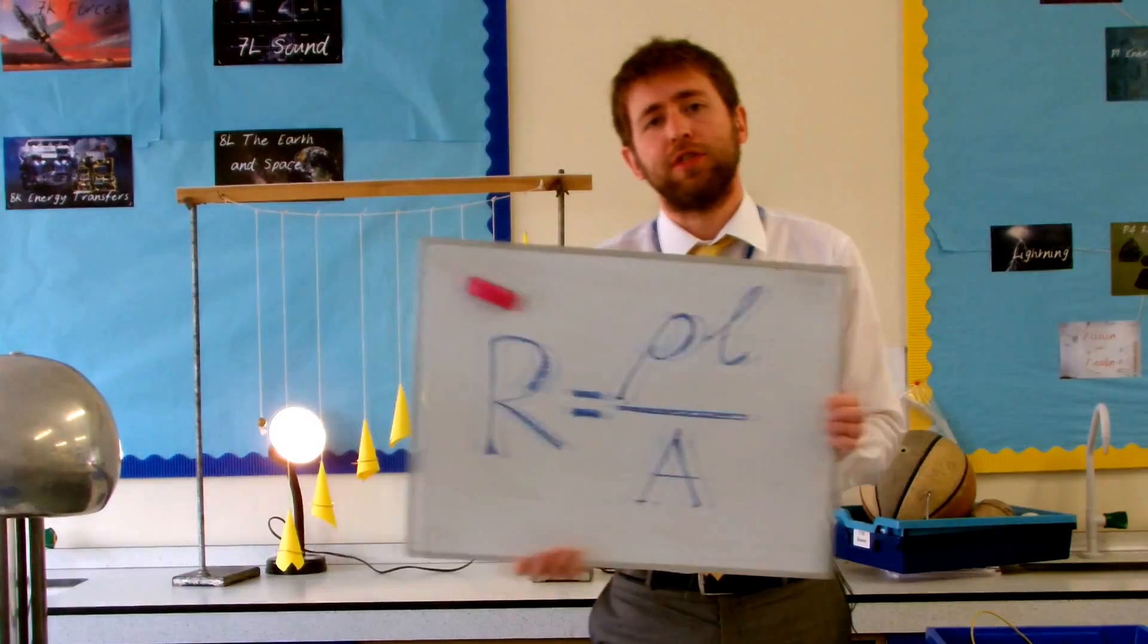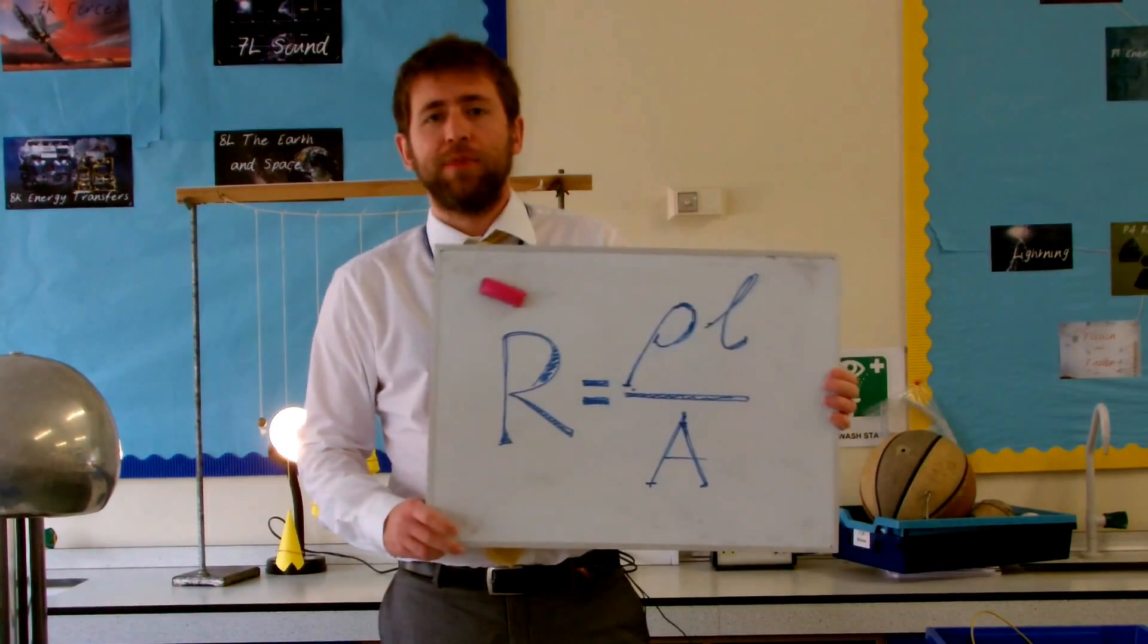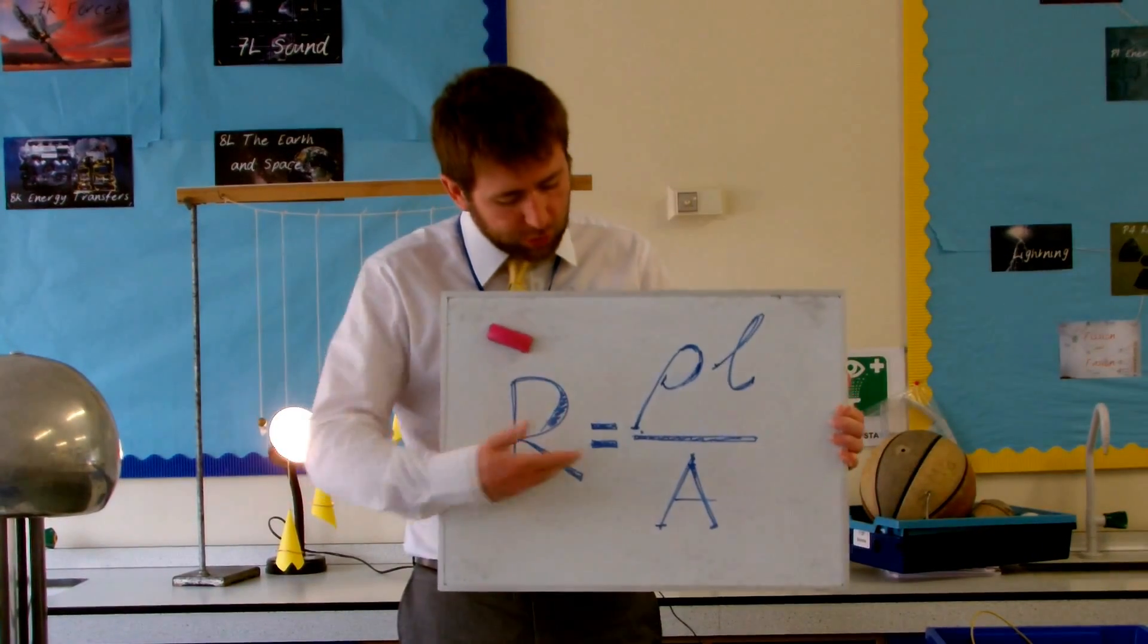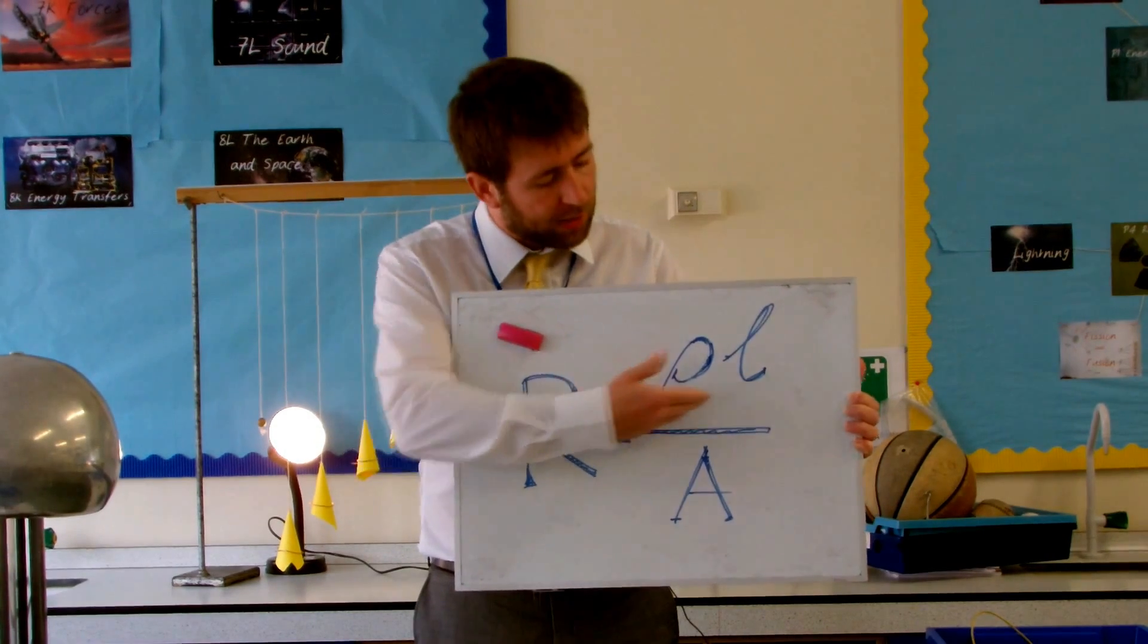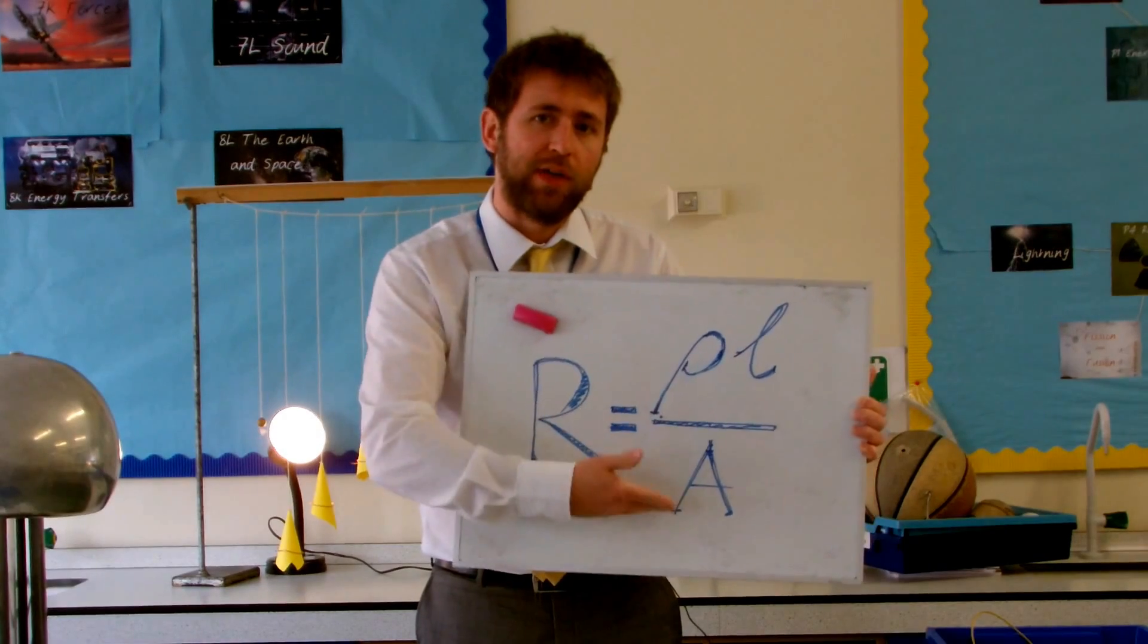Hello, I'm going to show you how to do a practical into the resistivity of a metal. We're going to use this equation here. Resistance is equal to resistivity, that's this funny looking ρ, a letter called rho, times by the length divided by the area.